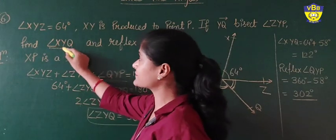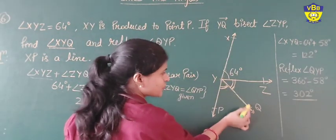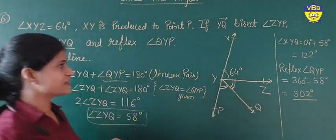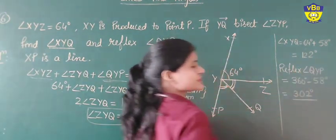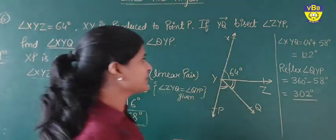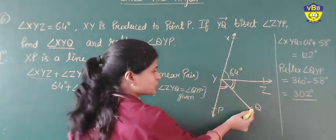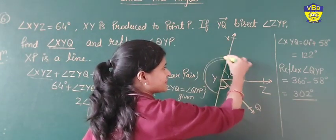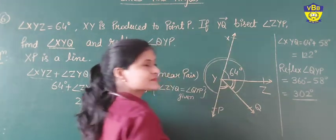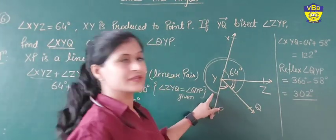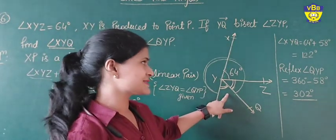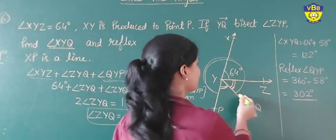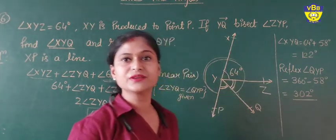Now they are asking for angle XYQ, which means 64 plus 58 degrees, which makes 122 degrees. And they also want to find the reflex angle QYP. This is found by subtracting from 360 degrees: 360 minus 122 is equal to 238 — wait, that gives 302 as the reflex value of angle QYP.